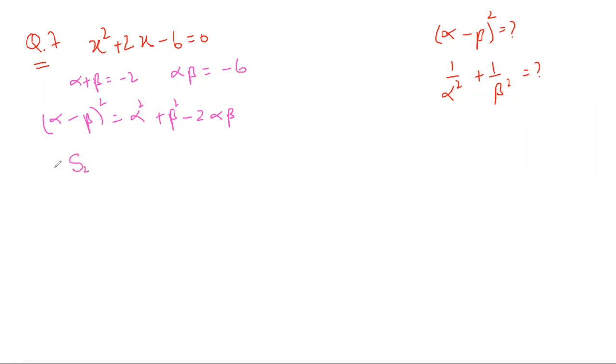We know that this alpha squared plus beta squared is basically known as S2. So this is your alpha squared plus beta squared, which is also known as sigma alpha squared. That is sigma alpha whole squared minus two sigma alpha beta.